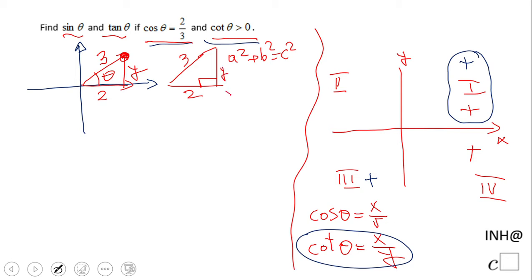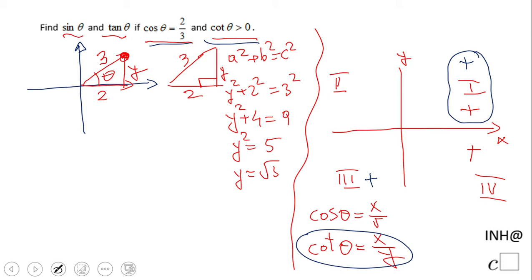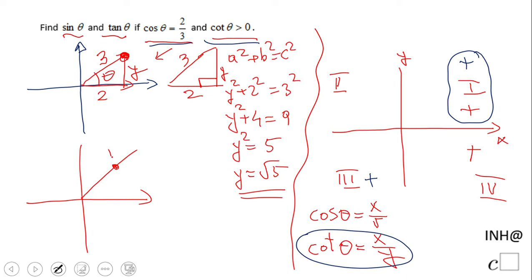We have y² + 2² = 3², so y² + 4 = 9. Subtracting four gives y² = 5, so y = √5. And since we're in quadrant one, y needs to be positive. So the point P has coordinates (2, √5).